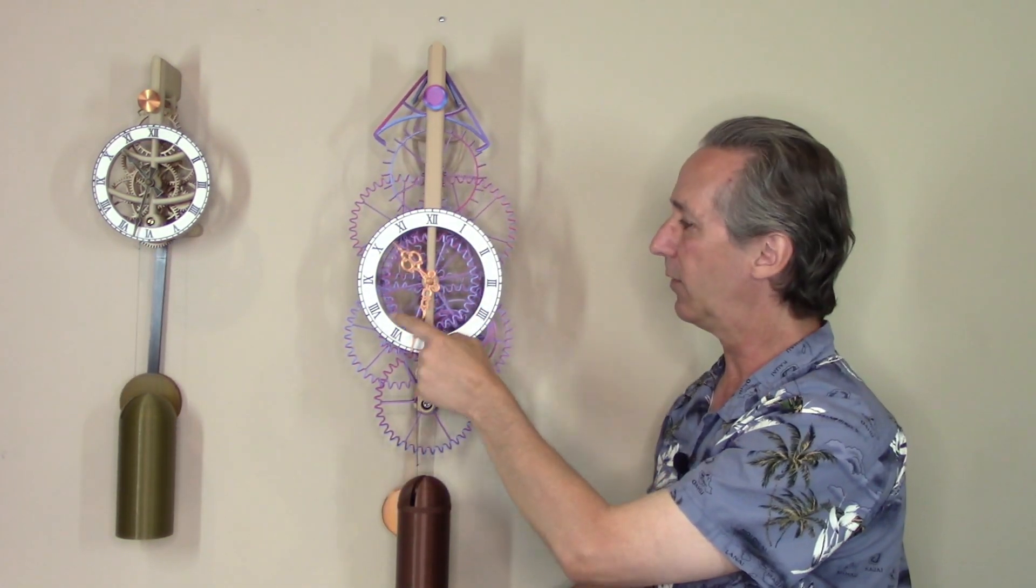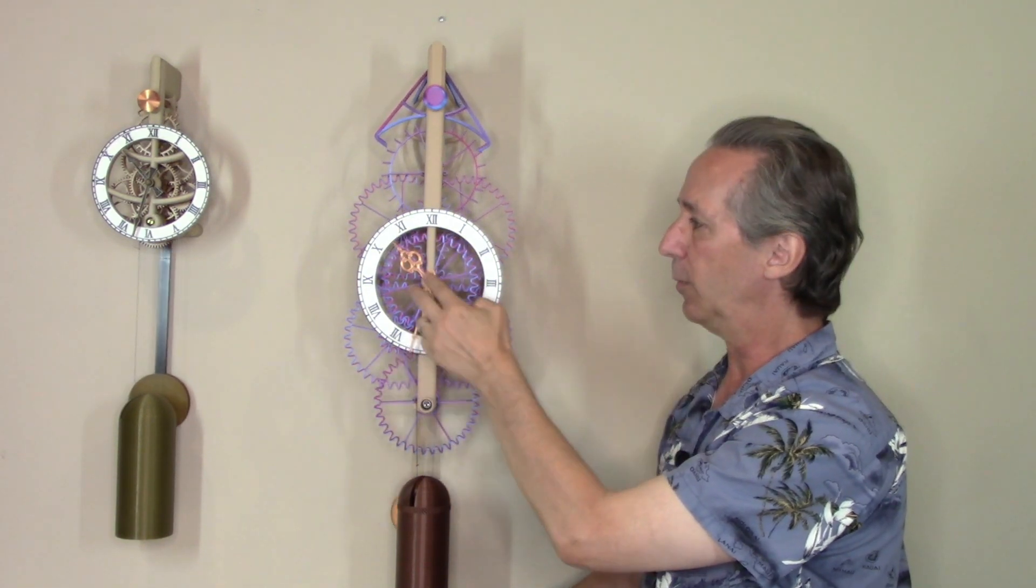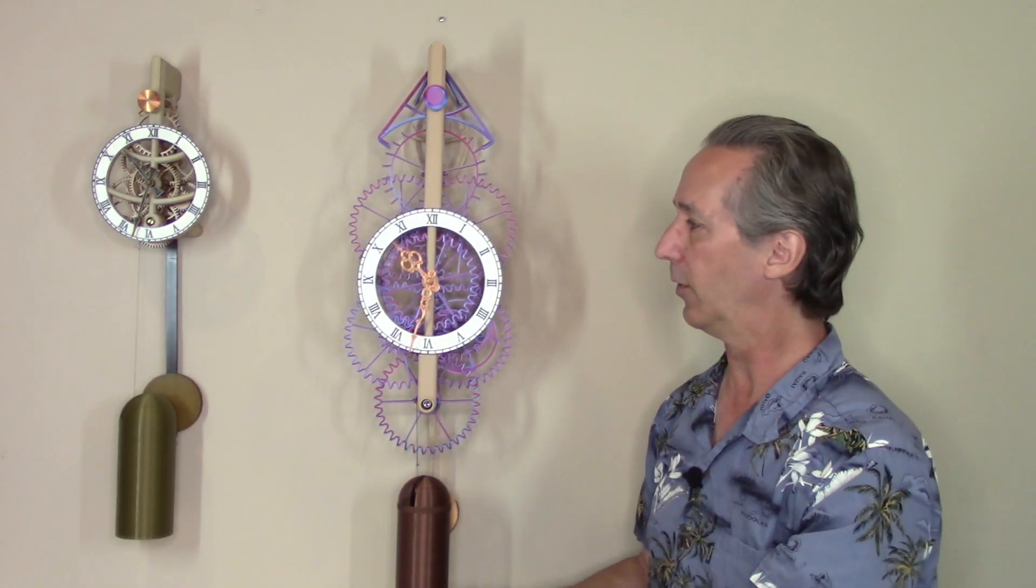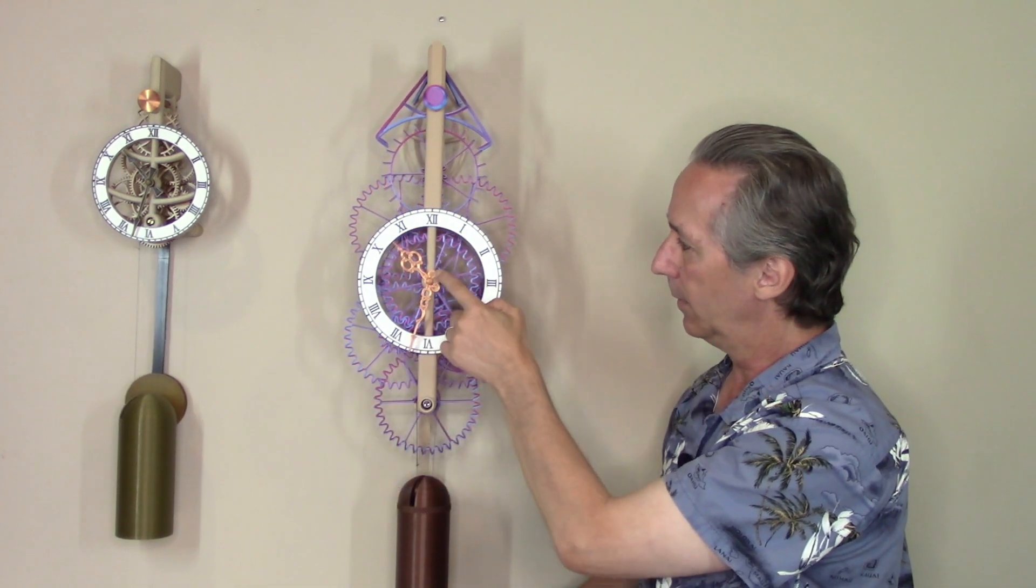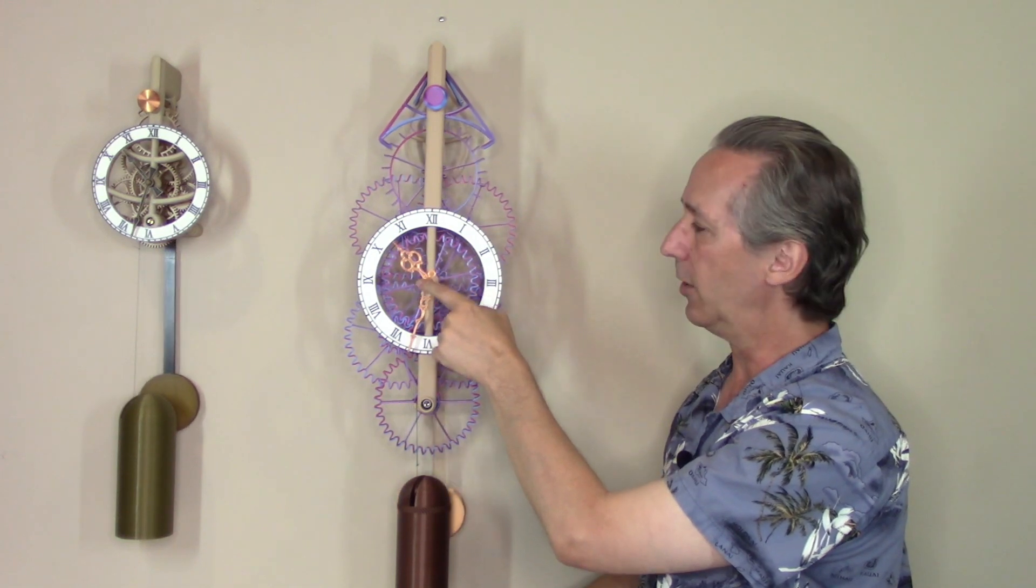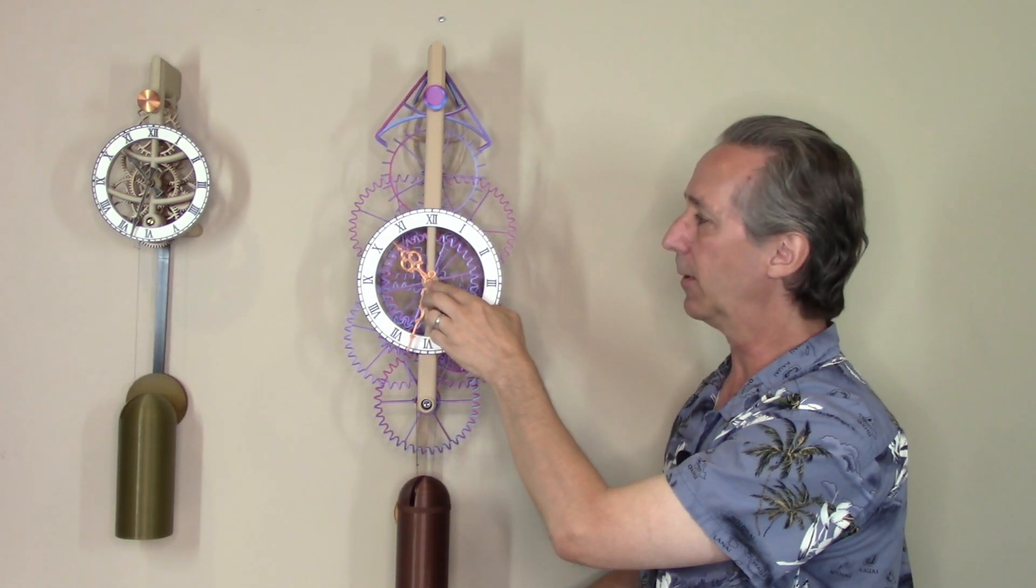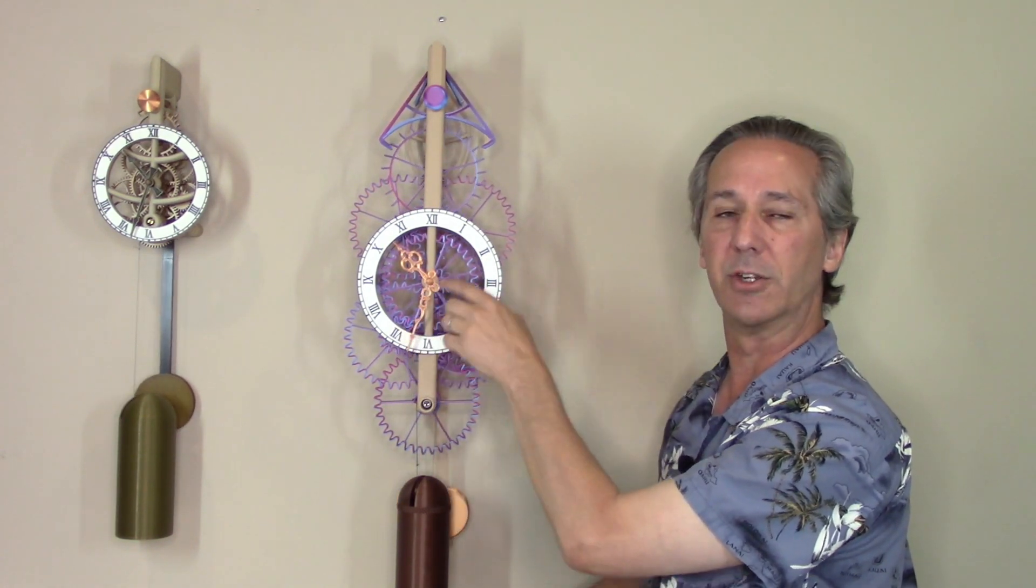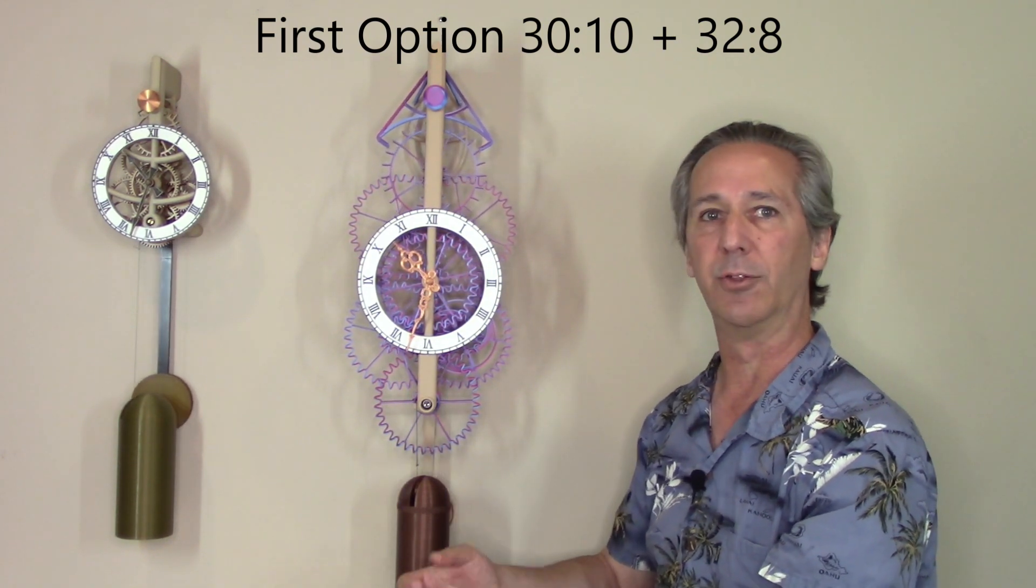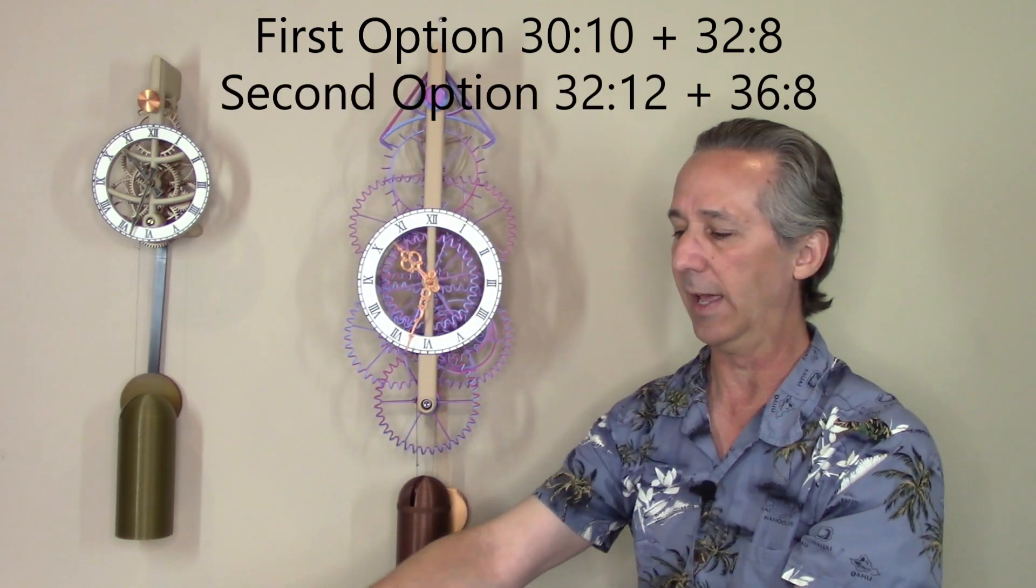Then I somewhat started the design looking at the 12 to 1 ratio between the minute hand and the hour hand and looked at how many different ways are there that you can do that. There has to be an equal number of gear teeth between the large gear and the pinion here and then the large gear and the pinion here. Typically that's done with a 3 to 1 ratio and a 4 to 1 ratio, as in 30 teeth driving a 10 tooth pinion and 32 teeth with an 8 tooth pinion. But I looked for other ways to do that as well.